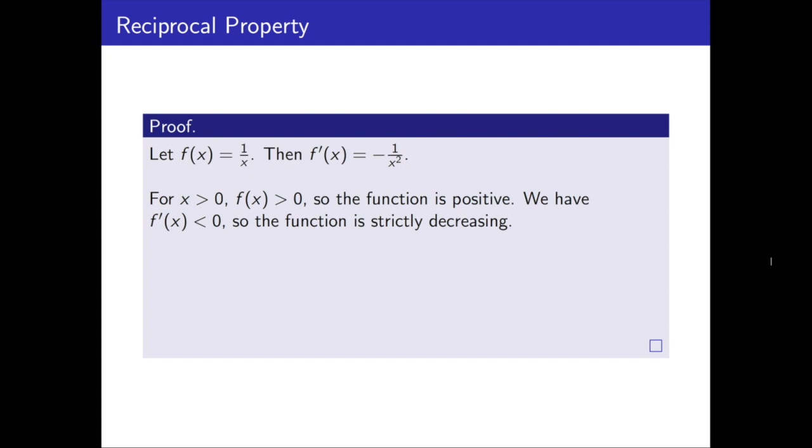That means it's always decreasing, it never stays the same or goes up, it's always going down. Now, if a function is decreasing, that means that if you apply it to a and b, where a is the smaller value, you get that f of b is less than f of a. And in this case, f of b is 1 over b, and f of a is 1 over a. So this is precisely the inequality that we said we'd like to prove.